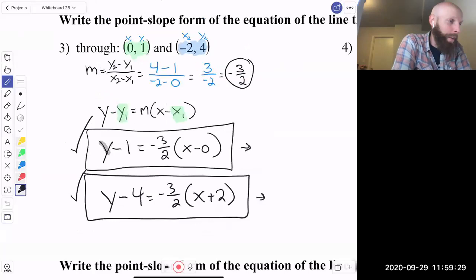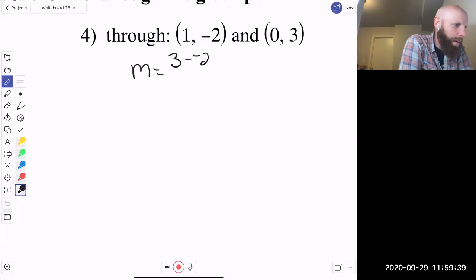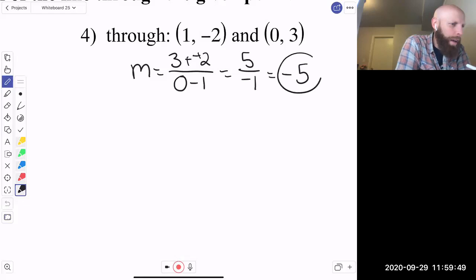All right, here you go. Do one on your own. Ready, go? And I'm going to do it and let's see if we get the same. So m equals y2 minus y1 over x2 minus x1. So this is really a plus plus, so we're going to call that 5 over negative 1. So I'm going to call this a negative 5 as my slope.